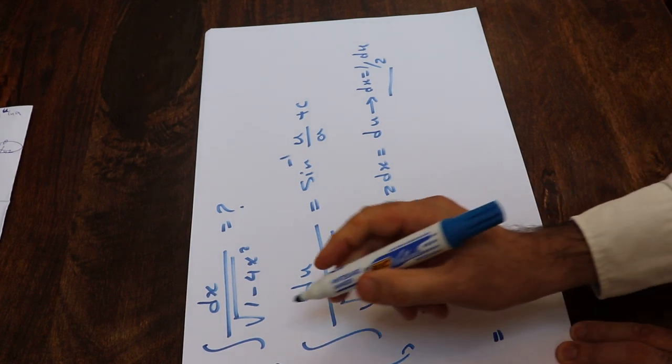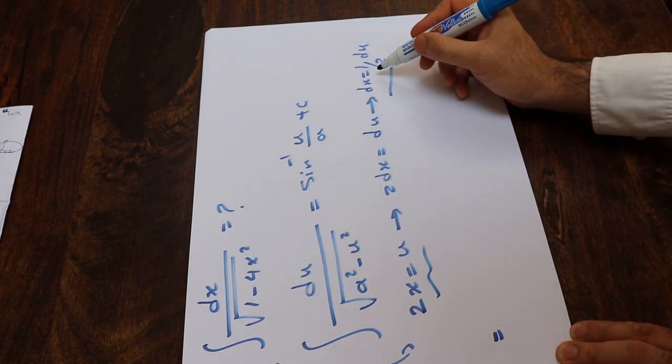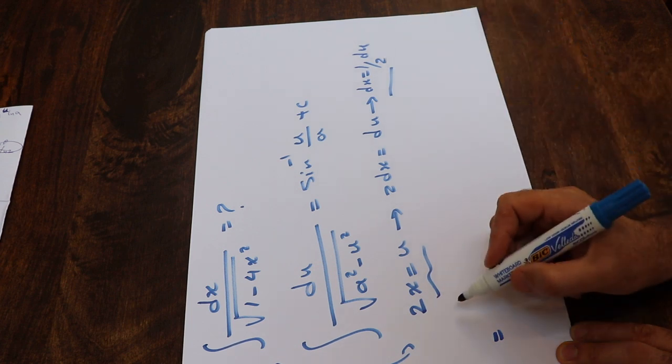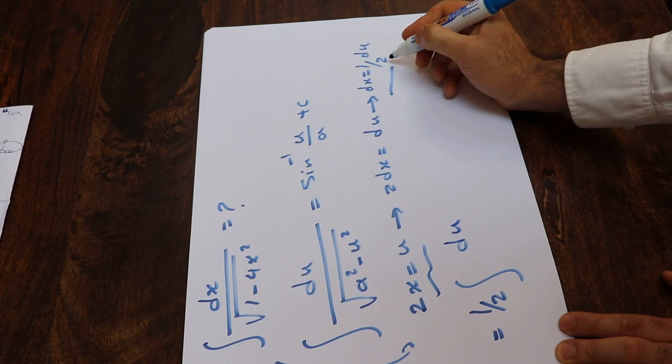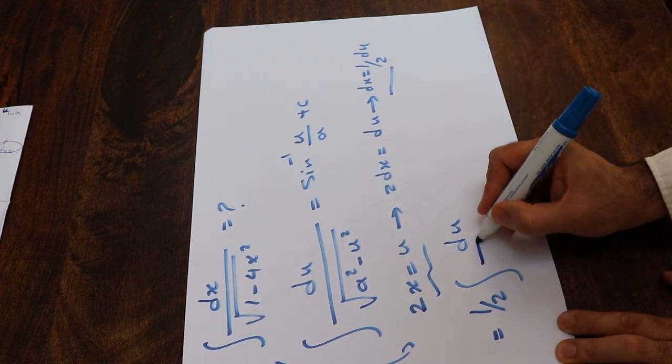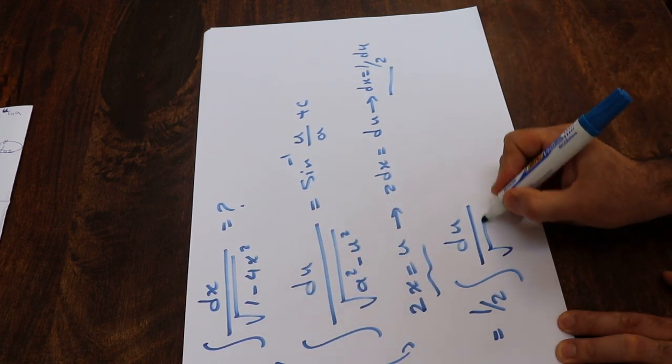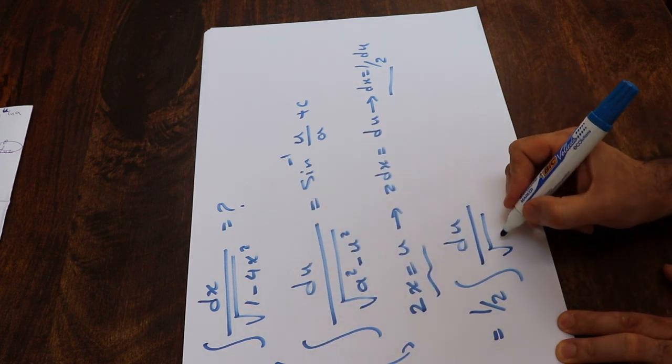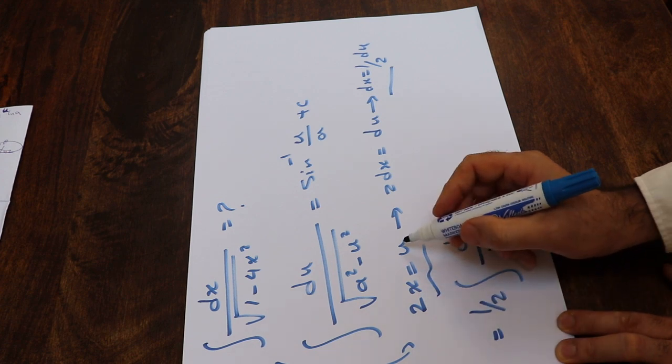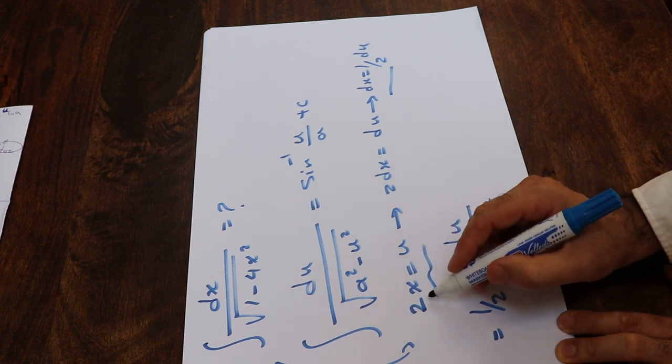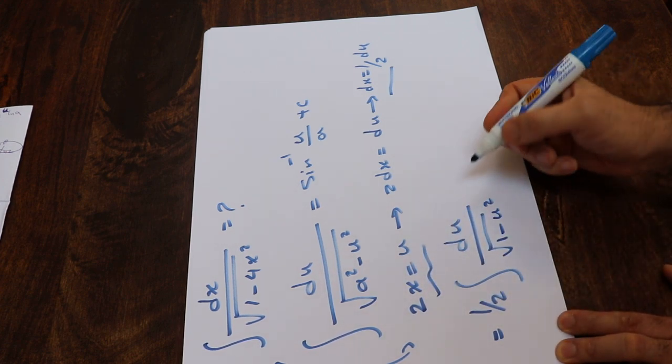I will get here, that will be equal to, instead of dx, I write 1 divided by 2 du, so 1 divided by 2 integral of du. 1 divided by 2 is constant, so I take it out of the integral. And then, instead of square root of 1 minus 4x², I write 1 minus u². Because 2x is equal to u, therefore 4x² will be equal to u².